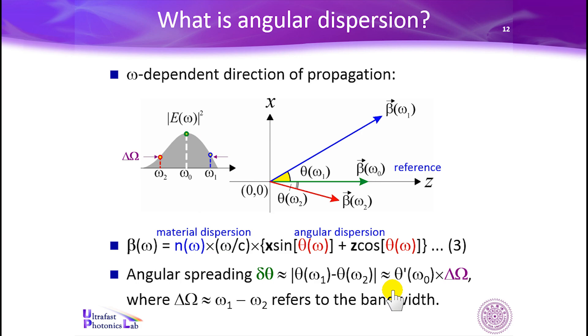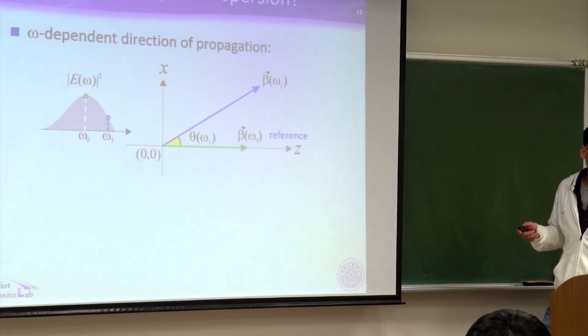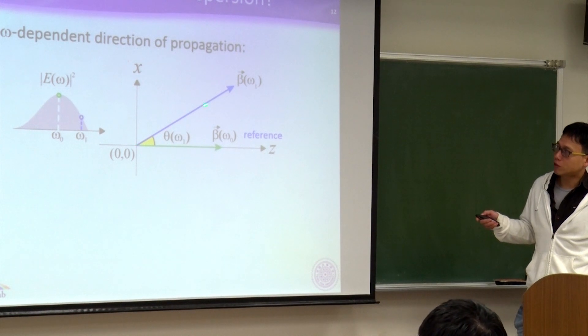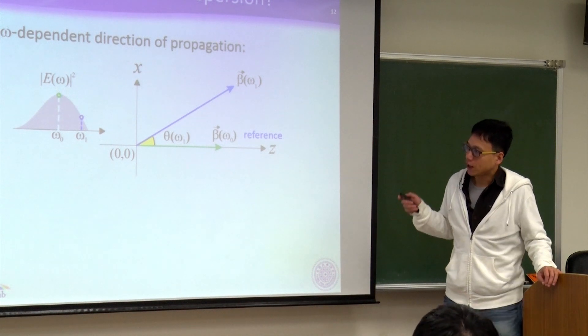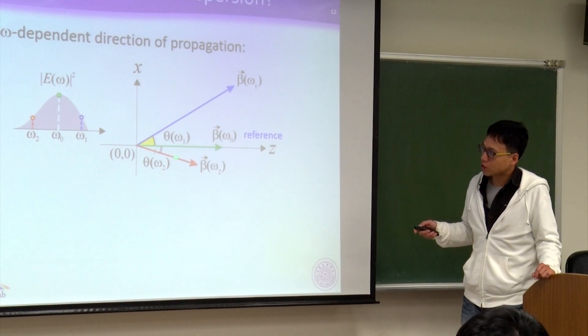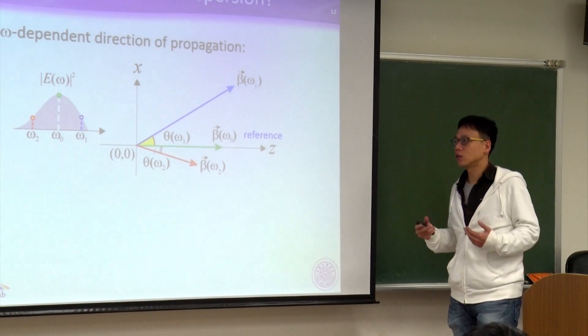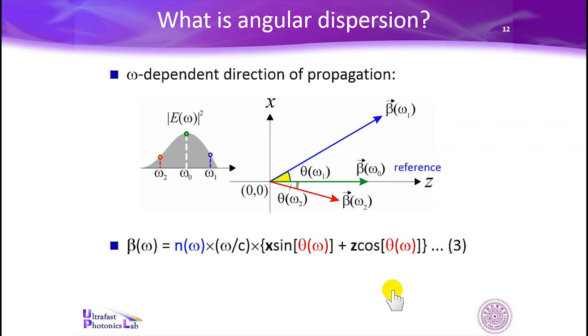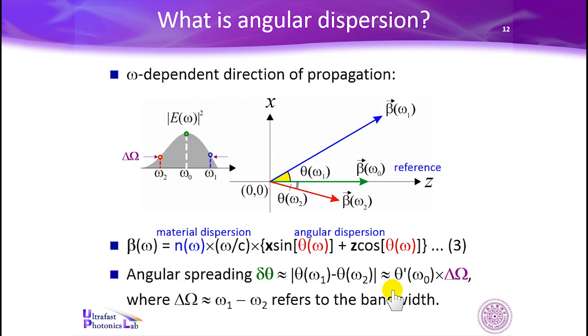Then, if at some higher frequency, say, omega equals omega one, the corresponding propagation direction is different. Say, represented by the blue arrow here, making an angle theta of omega one with respect to the reference direction, the green arrow. Then, at a third frequency, omega equals omega two, the propagation direction is also different, making another angle theta of omega two with respect to the reference. So, different colors propagate along different directions. This is defined as angular dispersion or frequency-dependent angle, frequency-dependent propagation direction.